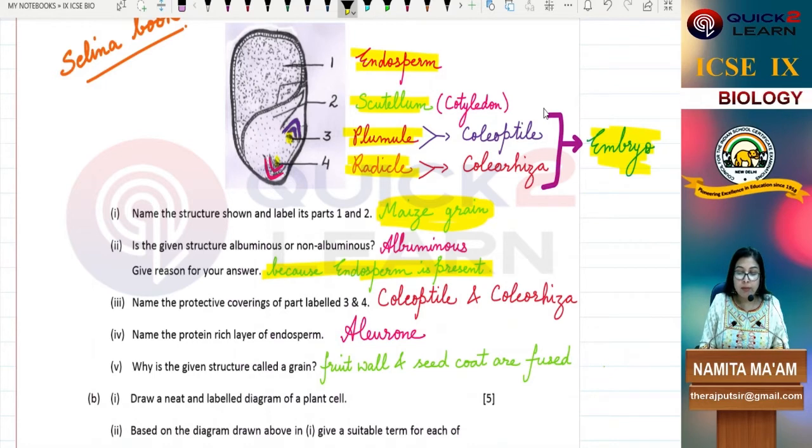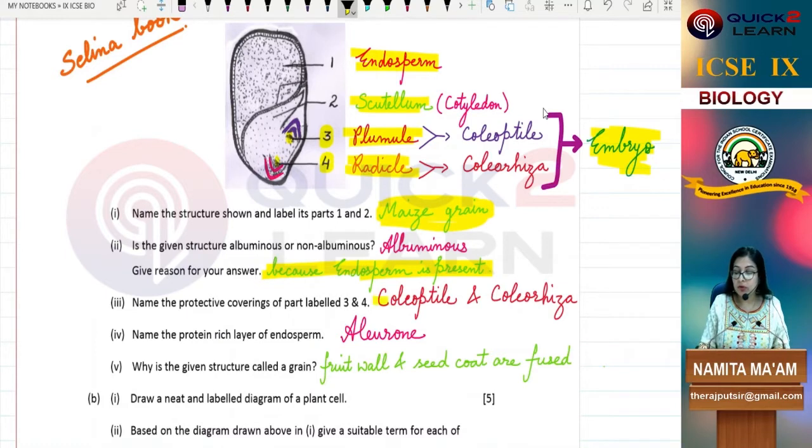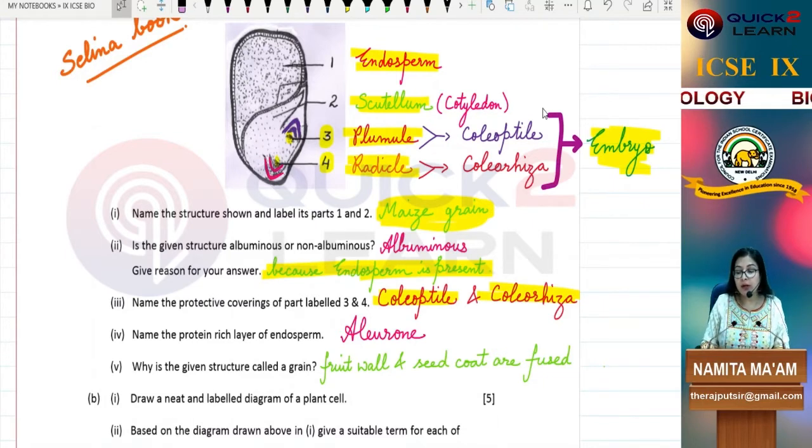Next is: Name the protective coverings of parts labeled 3 and 4. Parts 3 and 4 are plumule and radicle. Their coverings we have mentioned earlier: coleoptile and coleorhiza. So this is our covering. Name the protein rich layer of endosperm. The protein rich layer of endosperm is aleurone.